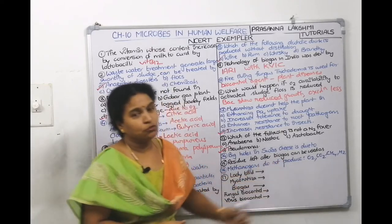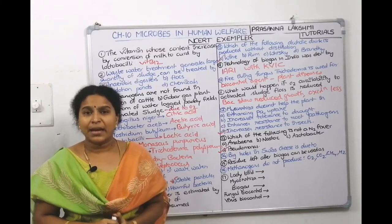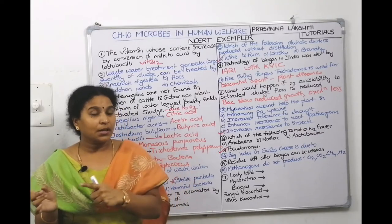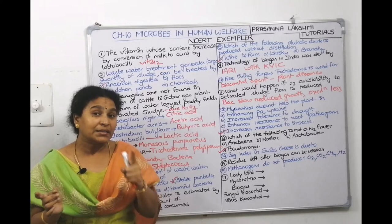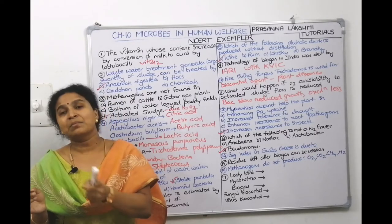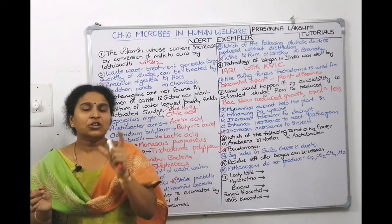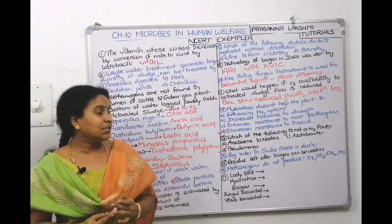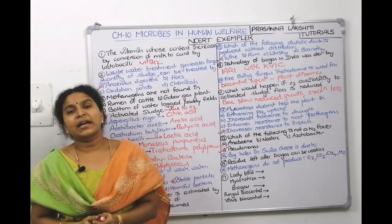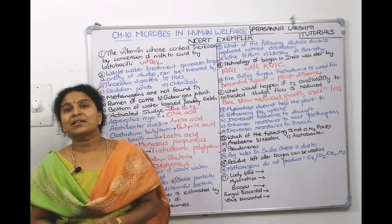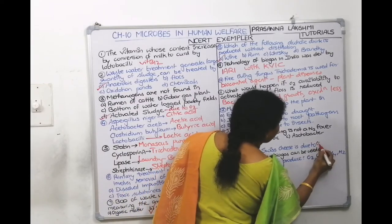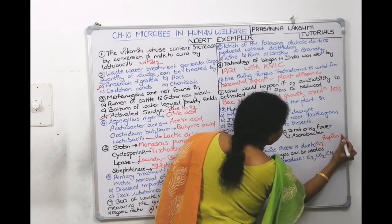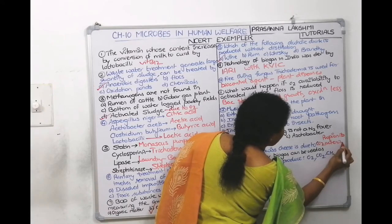Fourteenth question: big holes in Swiss cheese are due to — Under household production, Swiss cheese is produced by bacteria called Propionibacterium shermenii. Its characteristic feature is the big holes caused by large amounts of carbon dioxide evolution. So big holes in Swiss cheese are due to carbon dioxide produced by Propionibacterium shermenii.